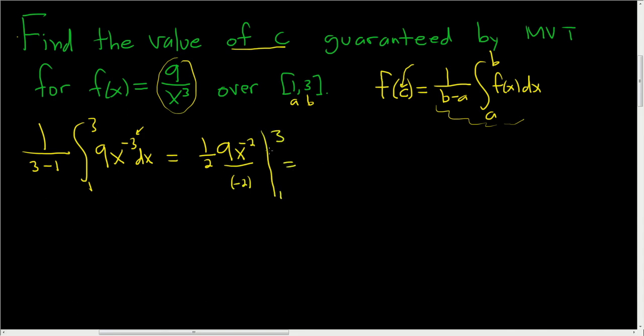So this is equal to negative 9 fourths times 1 over x squared from 1 to 3. And now we plug in 3, subtract, plug in 1. So this is going kind of fast.